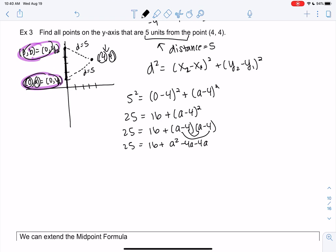So 25 = 16, and then we'll get a². We'll get -4a - 4a, and then we'll get +16.